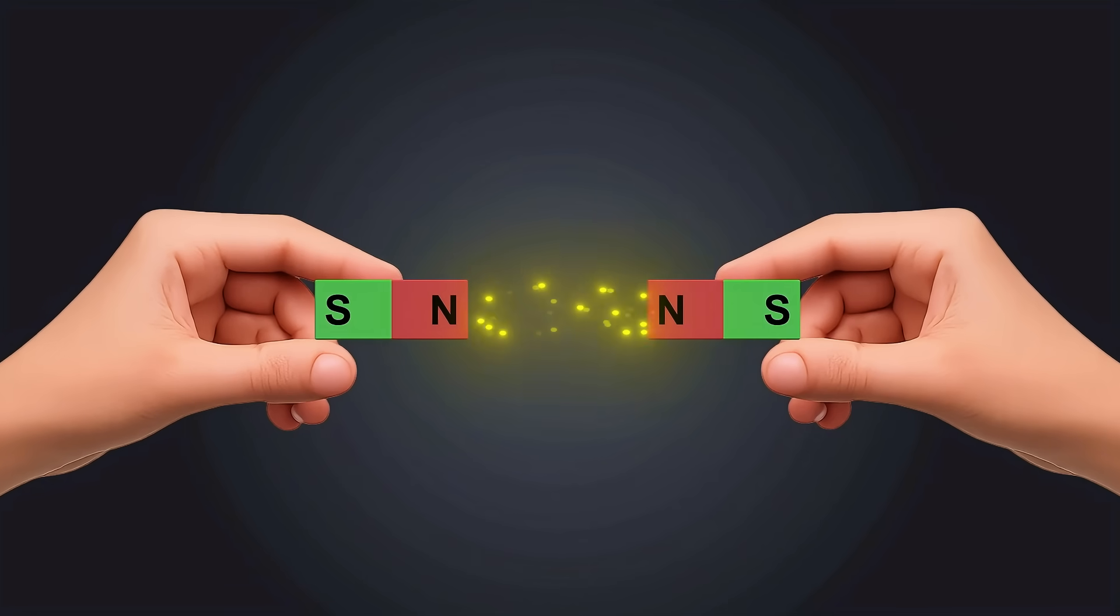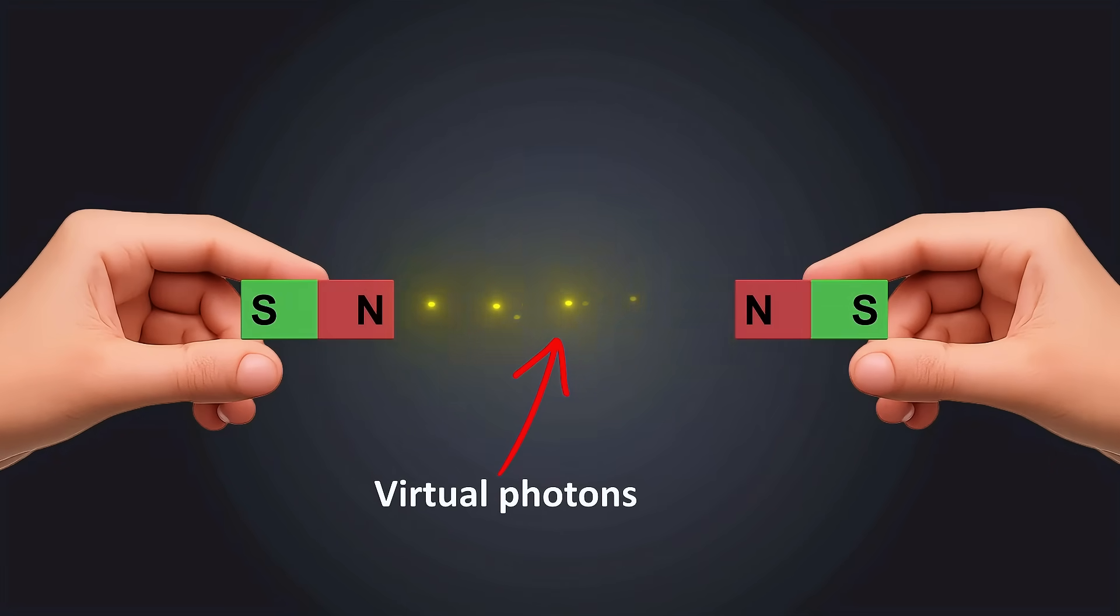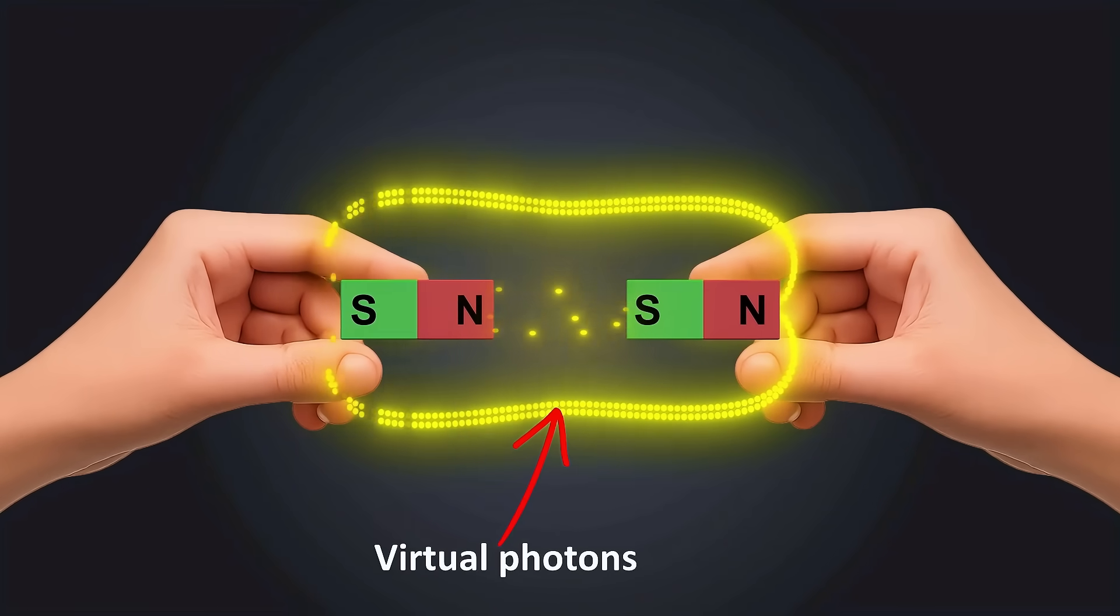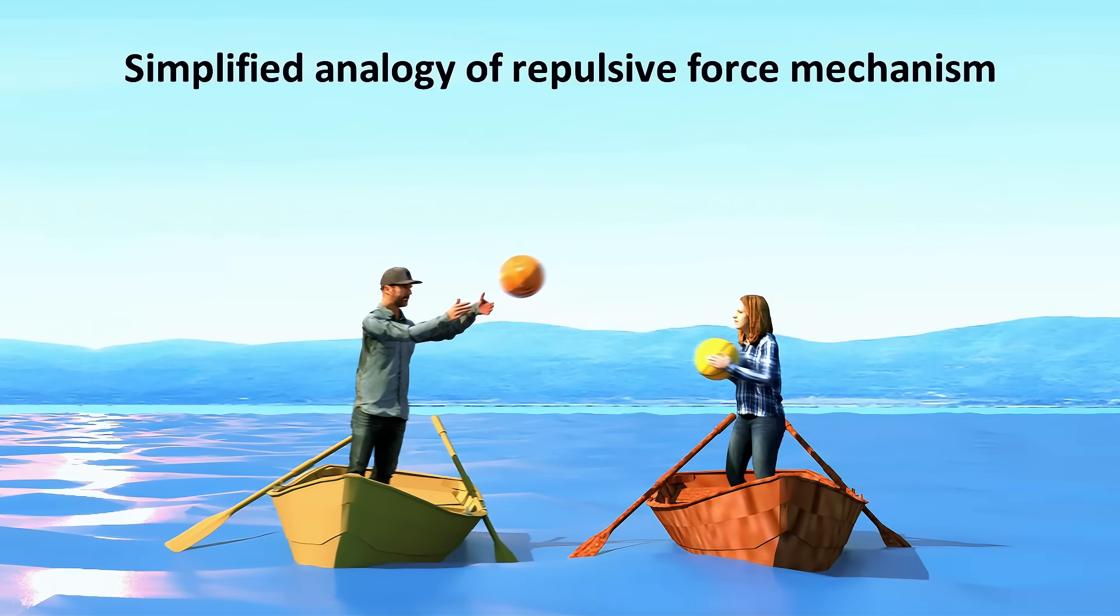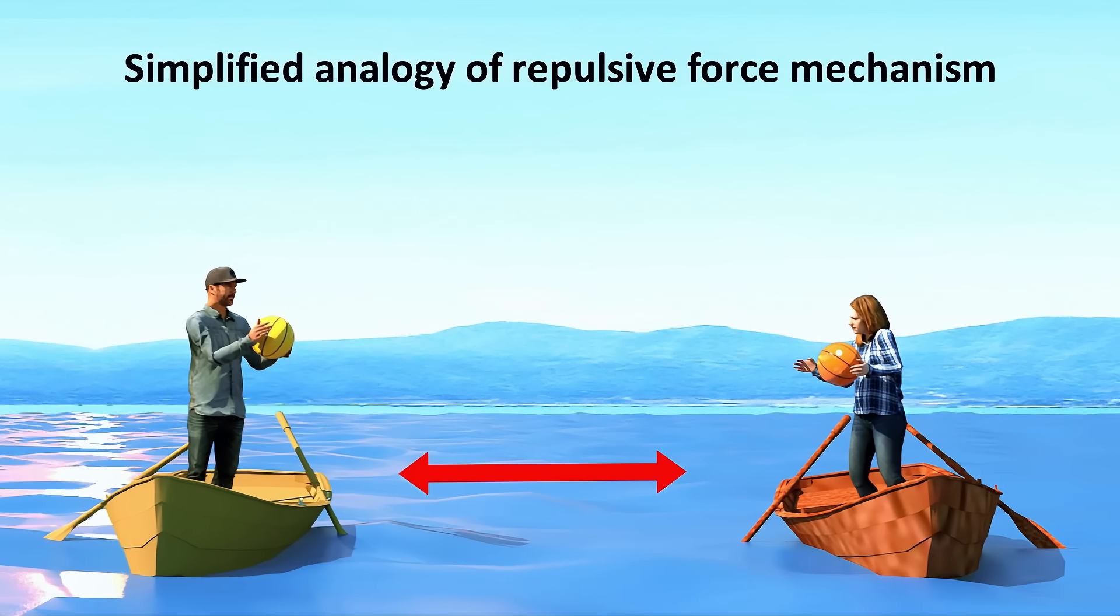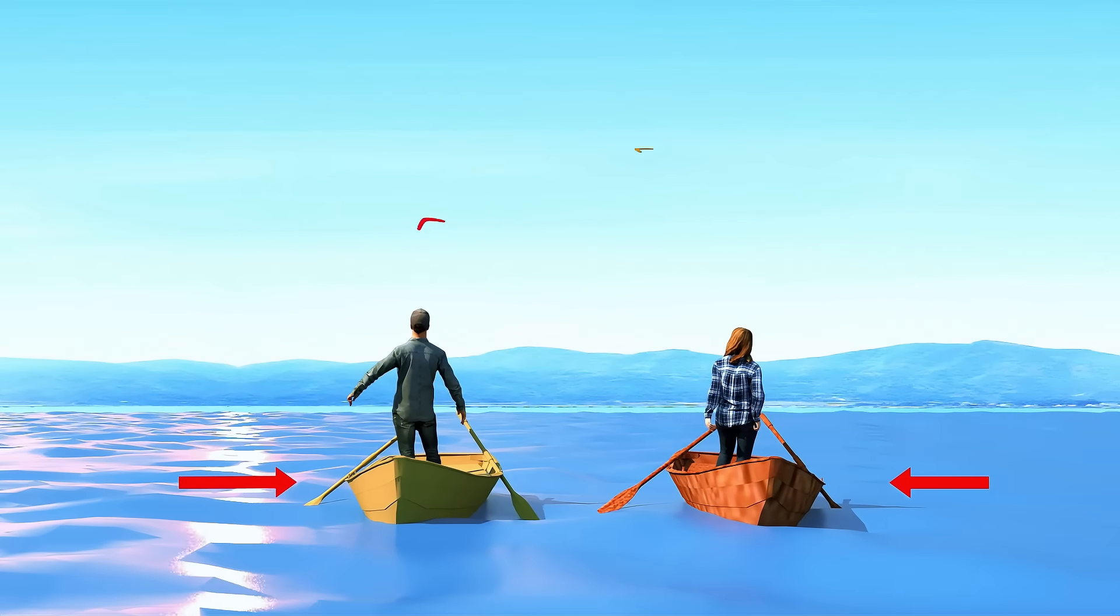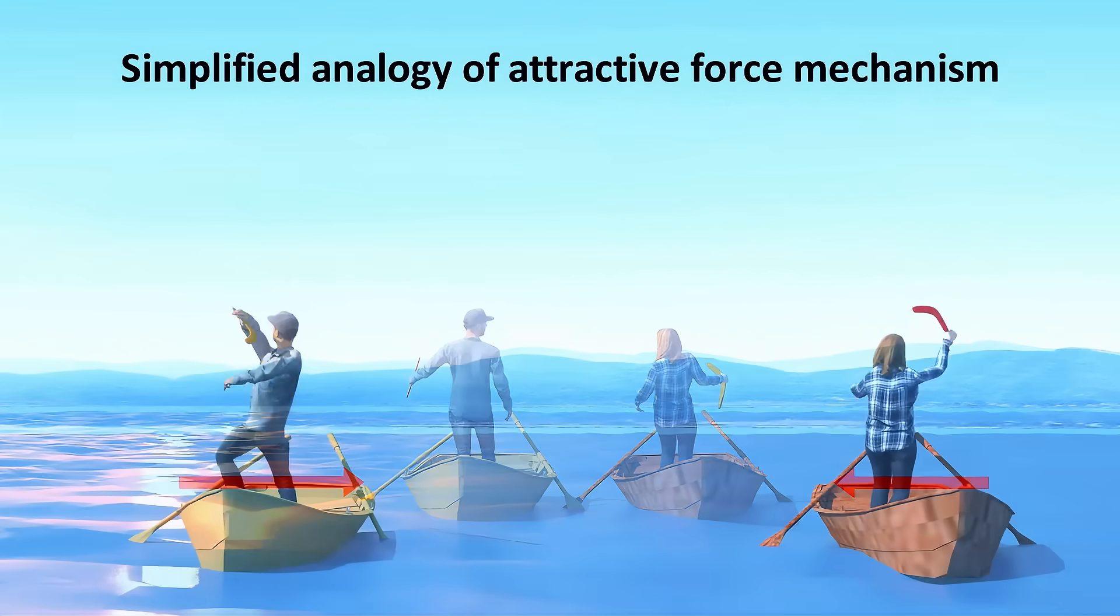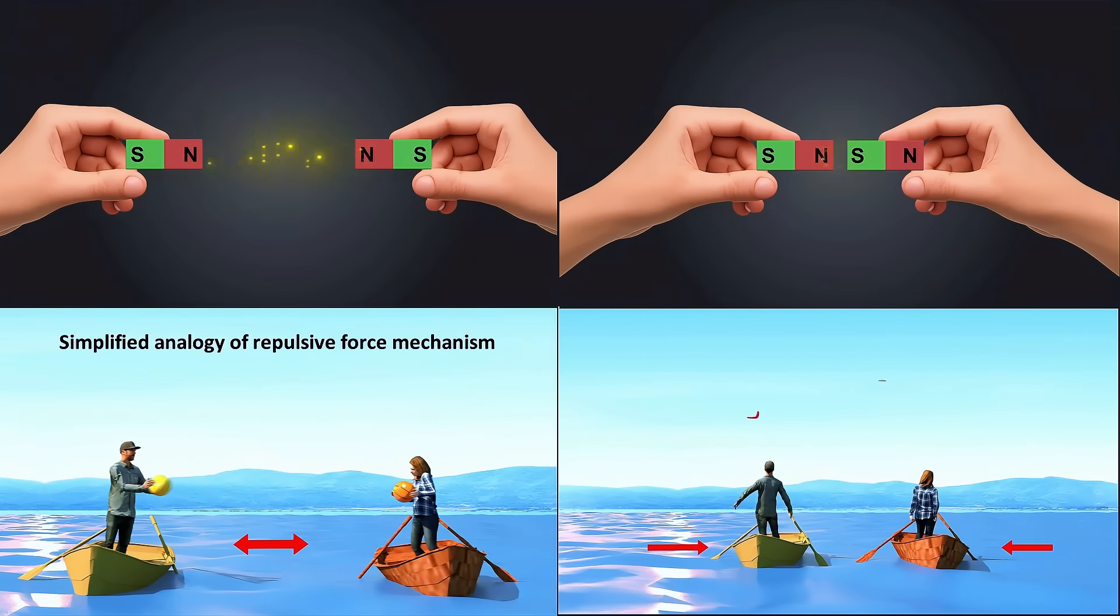According to QED, magnetic forces result from the exchange of tiny particles called virtual photons. These virtual photons act as messengers, constantly exchanged between charged particles and magnetic poles, communicating the electromagnetic force. Imagine two people in boats tossing a ball back and forth. Each time the ball is thrown and caught, they push each other apart slightly. Now imagine these two same individuals throwing boomerangs to each other. Each time they do that, they move closer together. Virtual photons are like invisible balls and boomerangs, exchanged between magnets, resulting in attraction or repulsion.